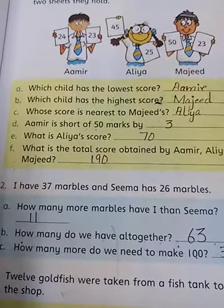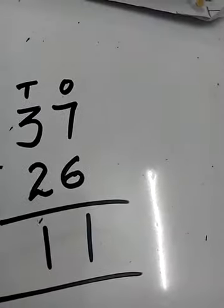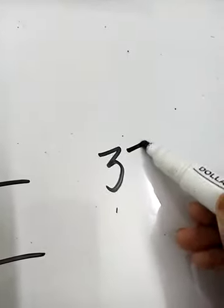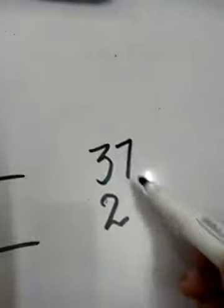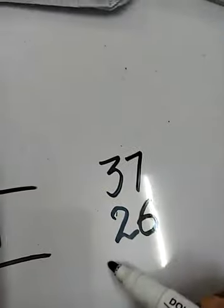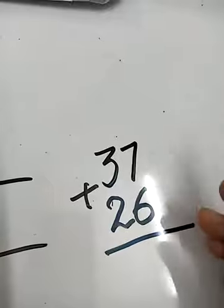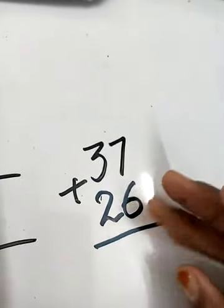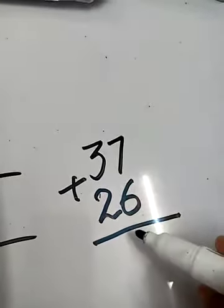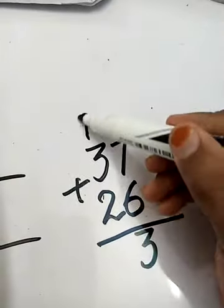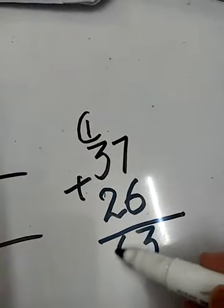How many do we have all together? It means we have to do 37 plus 26. In the ones: 7 plus 6 — counting 8, 9, 10, 11, 12, 13 — that's 13. Write 3, carry 1. In the tens: 3 plus 1 carry is 4, plus 2 is 6. So 37 plus 26 equals 63.